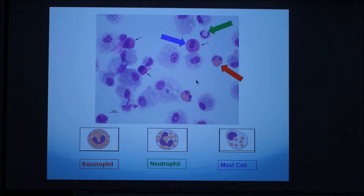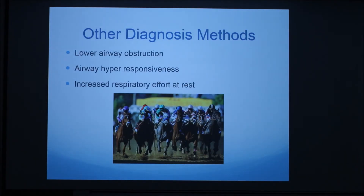Q: Do you ever get any red blood cells? A: Sometimes we do, yeah, but that only usually happens if the horse is bleeding actively from post-race conditions, which I'll show later. Other diagnosis methods include auscultating the lungs and trachea of the horse, where you can observe lower airway obstruction, hyper-responsiveness such as an enlarged trachea doing more work, and increased respiratory effort at rest.